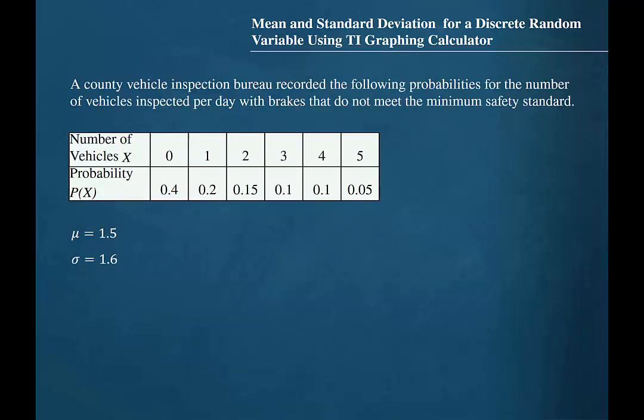Remember that the rounding rule for the mean and the rounding rule for the standard deviation are to round to one more decimal place than occurs in the raw data. Our raw data are the numbers of vehicles, which are whole numbers, so we should round to one more decimal place. Therefore, we will report the mean as 1.5 and the standard deviation as 1.6.